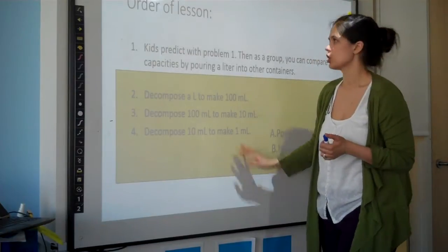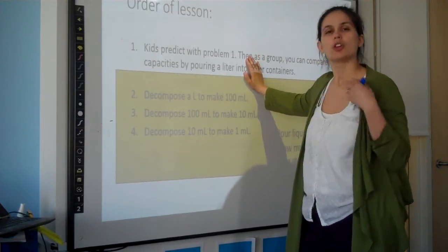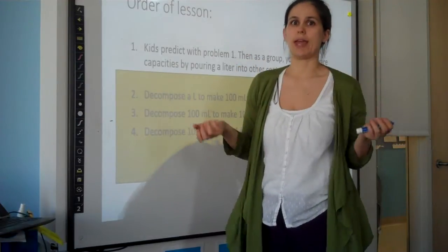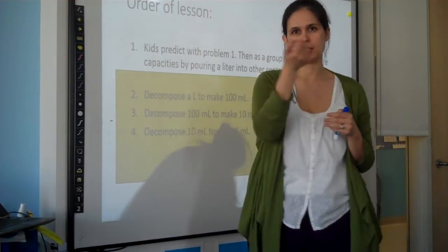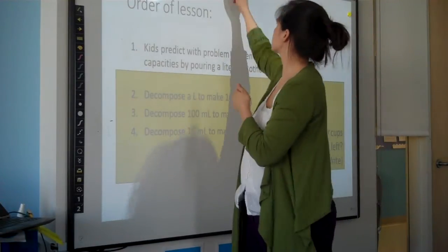Then this is the order of the lesson. You want kids to predict in problem number 1 using the containers that you lay out for them. So you have a cup, you have a pint, you have a quart, and you have a gallon, and you say, this is a liter. We write it like this.